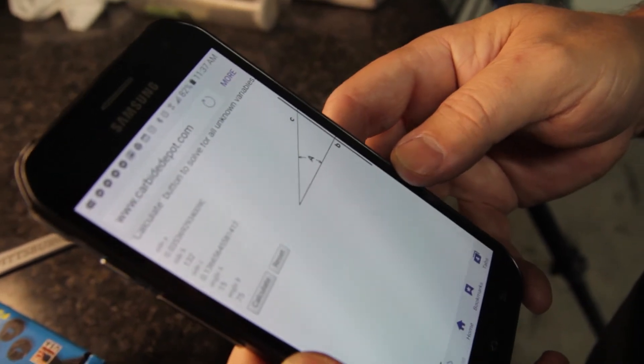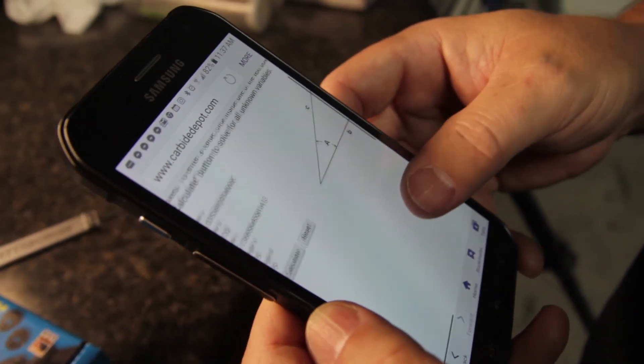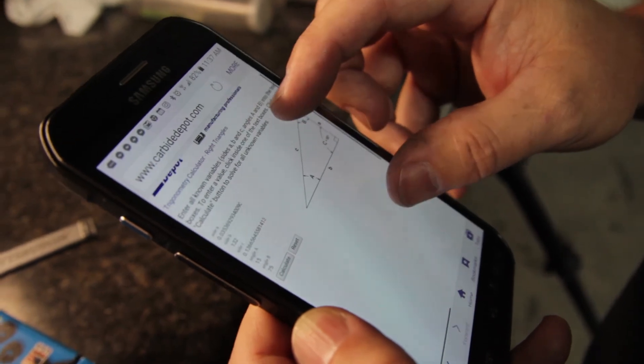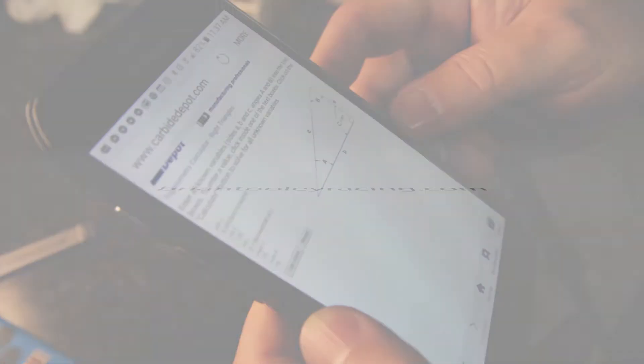The dial indicator measures vertical valve drop, whereas the dial caliper measures actual valve drop with a 15-degree angle factored in.